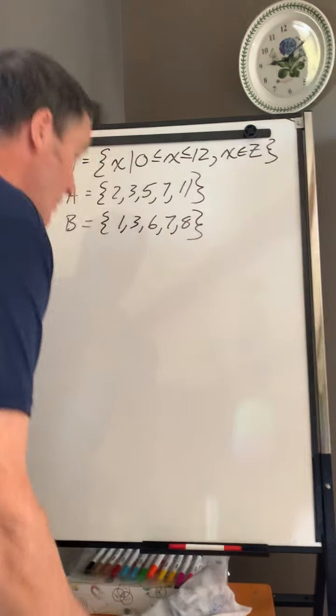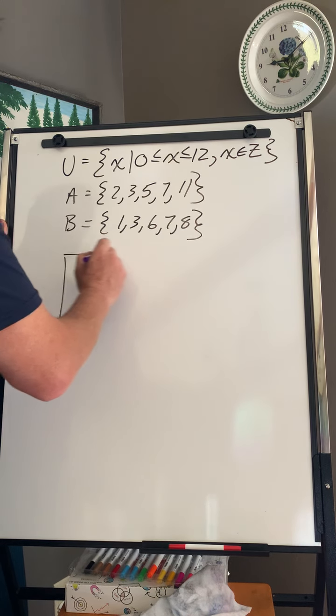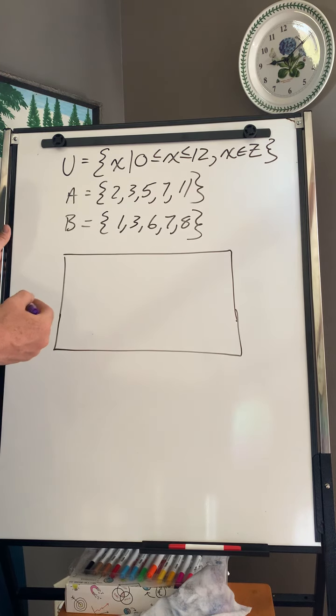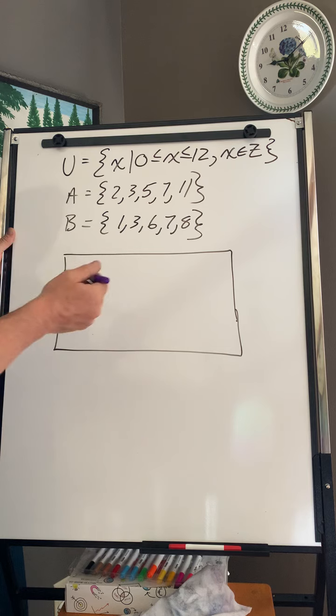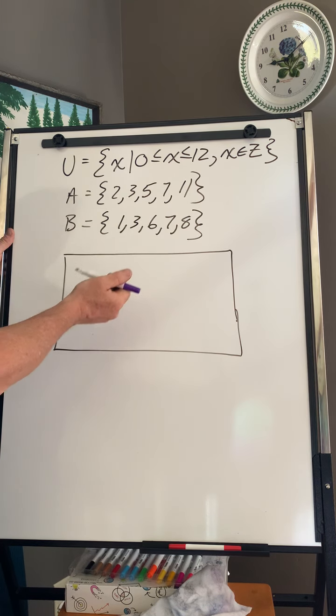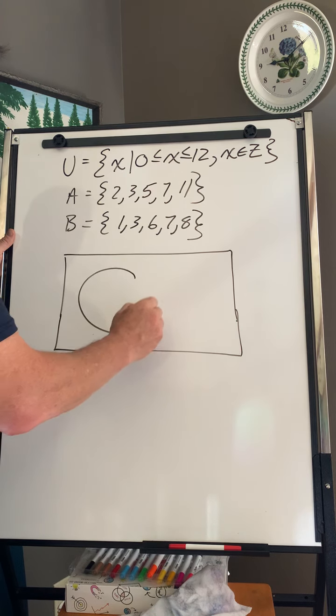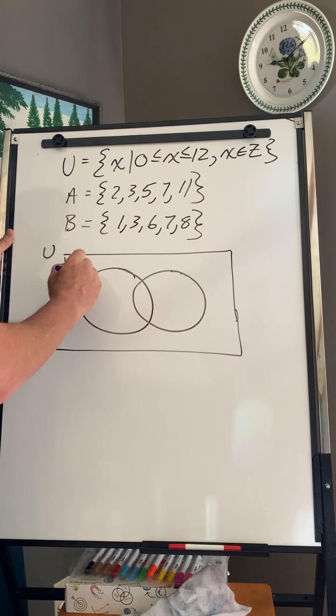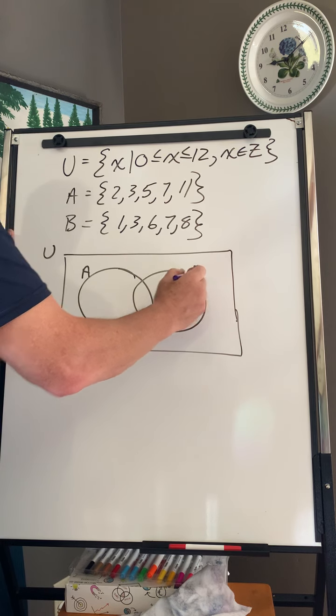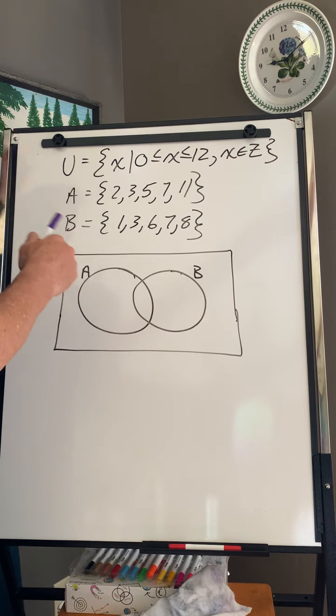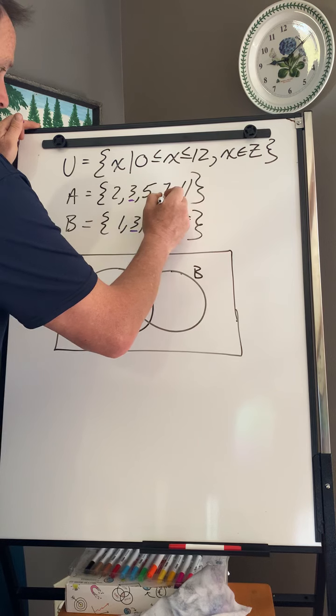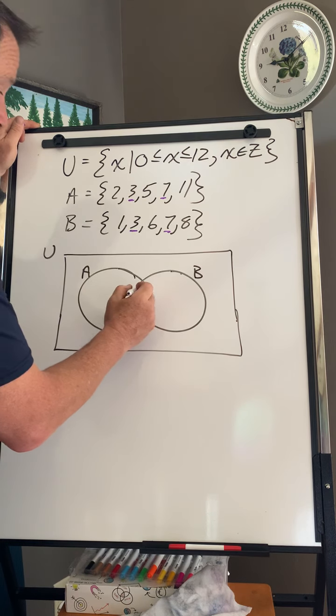Okay. So the first thing is we've got to make the universal set. We get two circles. Now, here's the interesting part. Before I start drawing, I look to see if there's any overlap. 3 is in both. 7 is in both. Okay. So that means I do this wonderful little overlap. So I get my universal set. I get set A, set B. I always start at the center and work my way out. So I've got 3, 7. So they both go in here.